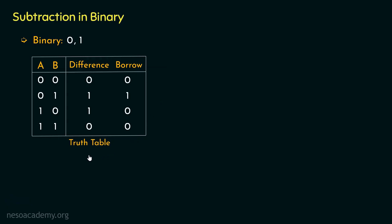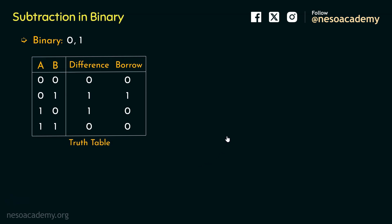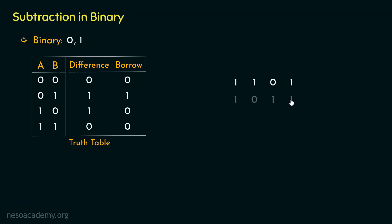In the previous session when we were learning about binary subtraction, we formed a truth table for binary subtractions. Now just to jog our memory, let's perform another subtraction. This time the minuend is 1101 and we are subtracting 1011. Now 1 minus 1 gives us a difference of 0 and the borrow is 0.